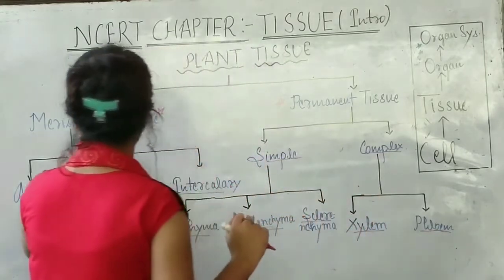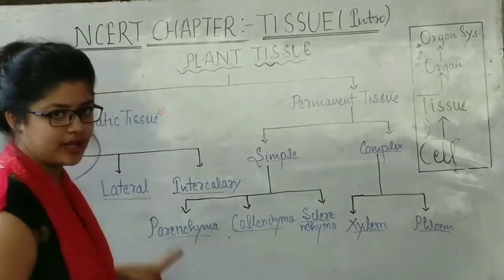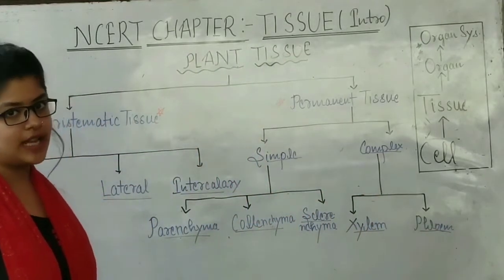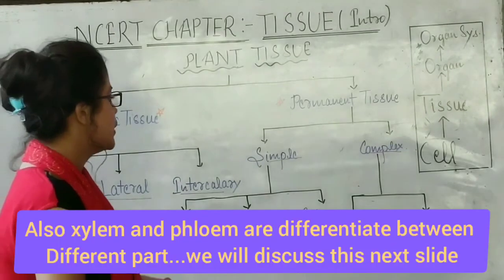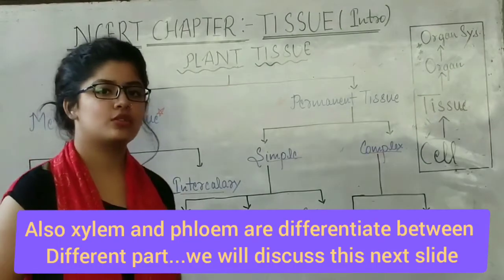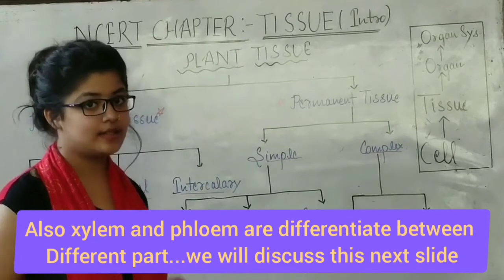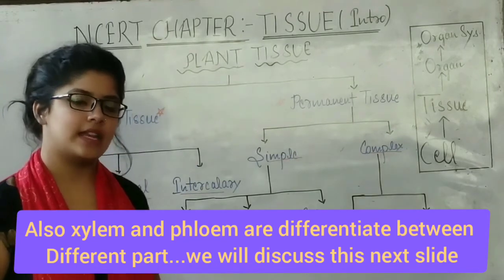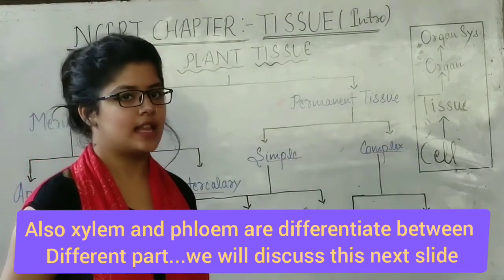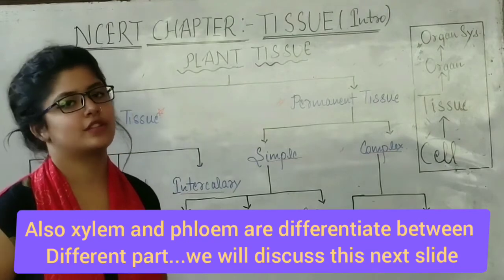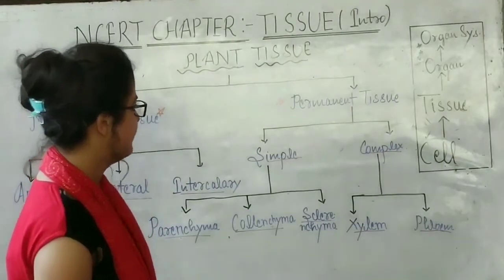Meristematic tissue is differentiated into apical, lateral, and intercalary. Permanent tissue is differentiated into simple and complex. Simple tissue is further differentiated into parenchyma, collenchyma, and sclerenchyma, and complex tissue is differentiated into xylem and phloem.